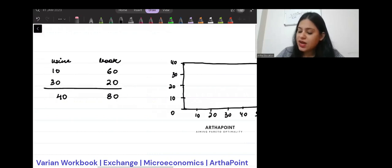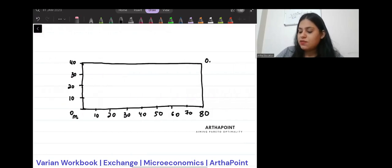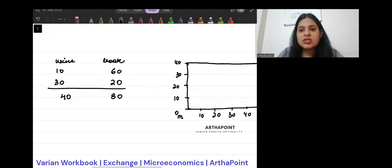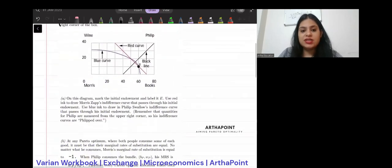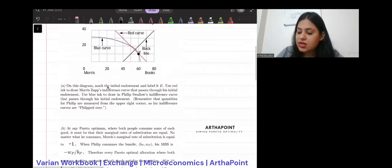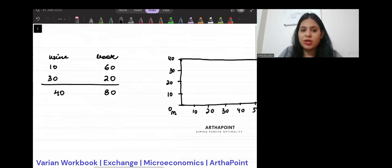Now, this is O.M. Morris and this is O.P. Philip. If I go to the first part, it says, on the diagram, mark the initial endowment and label it as E. So, I am supposed to mark this initial endowment.